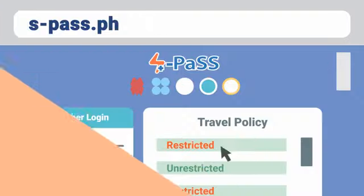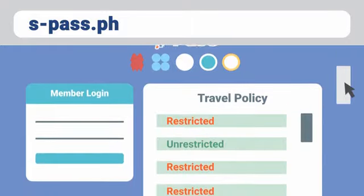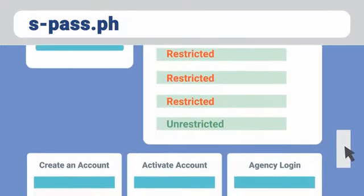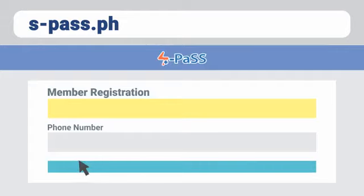Step 2: Traveling to a restricted LGU? Create an ESPASS account on the website. You will need your personal mobile number to register.